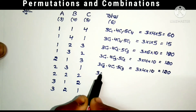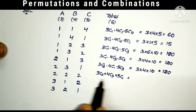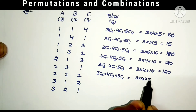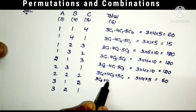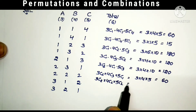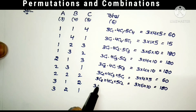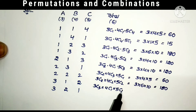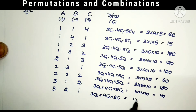The next combination is 3C2 × 4C3 × 5C1, which equals 3 × 4 × 5 = 60. Then 3C2 × 4C2 × 5C2 equals 3 × 6 × 10 = 180. Then 3C3 × 4C1 × 5C2 equals 1 × 4 × 10 = 40. And 3C3 × 4C2 × 5C1 equals 1 × 6 × 5 = 30.